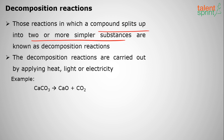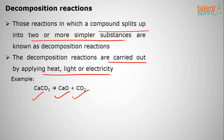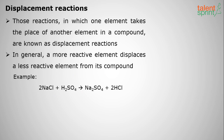Opposite to combination reaction is decomposition reaction, where a single compound splits into two or more simpler substances. These are carried out by applying heat, light, or electricity. For example, calcium carbonate on heating gives calcium oxide and carbon dioxide. Whenever heat is applied, the compound disintegrates into these two forms.